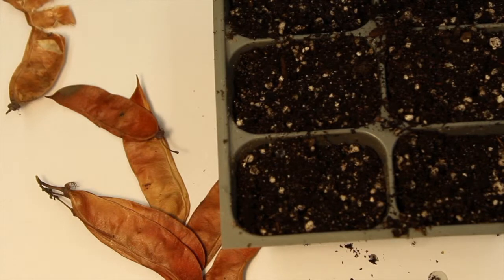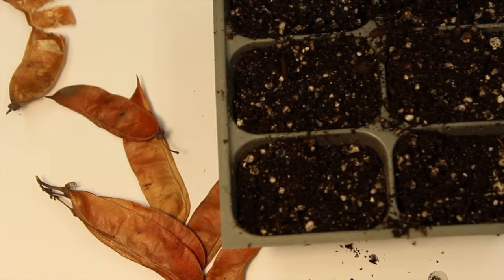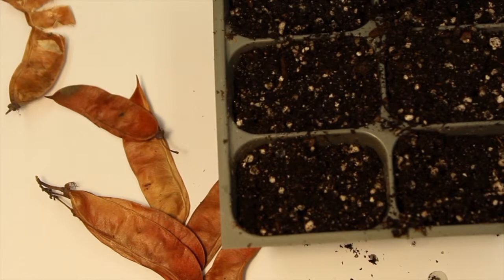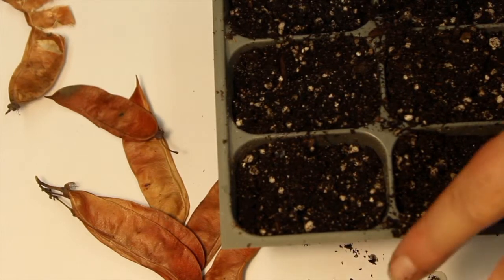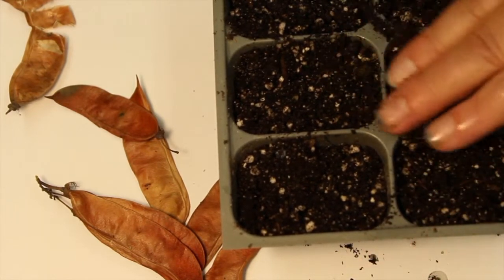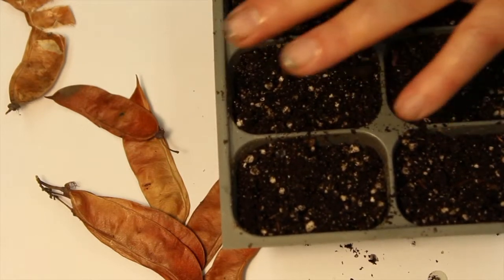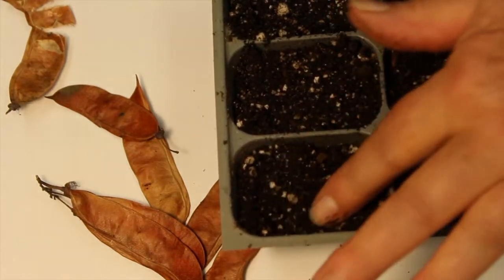I'm guessing that Mr. Dyer's refrigerator is probably in the high 30s, which is enough for these to get enough chilling. And then in two months I'll come take it out and put it in the greenhouse and the seeds should germinate.